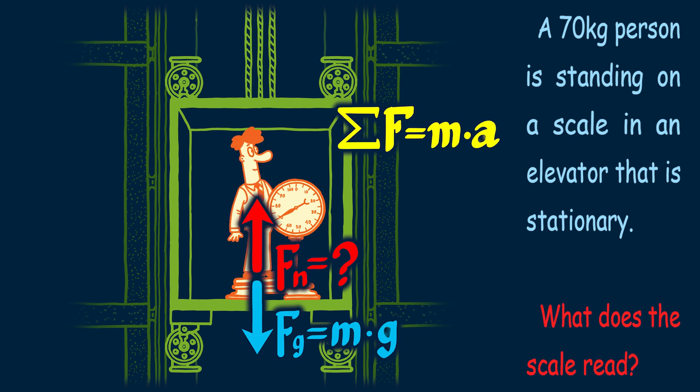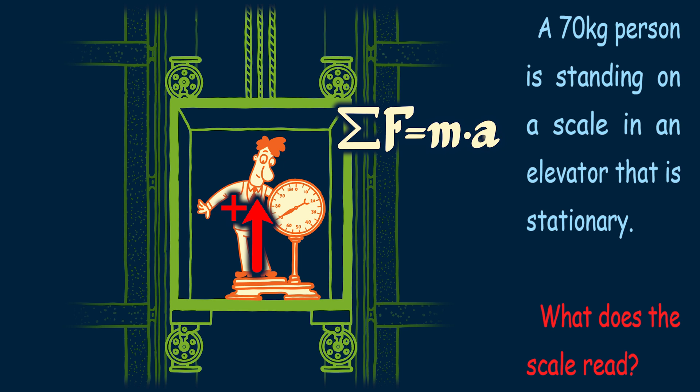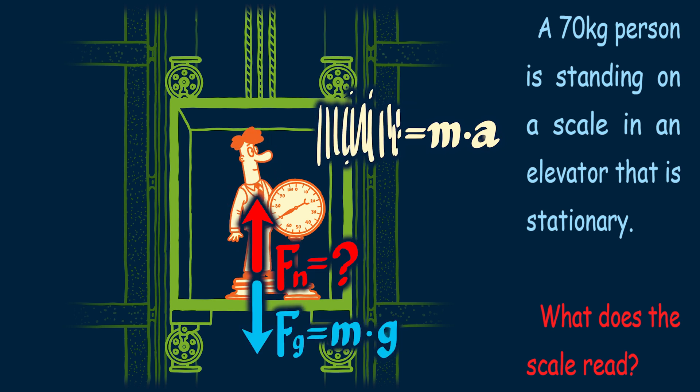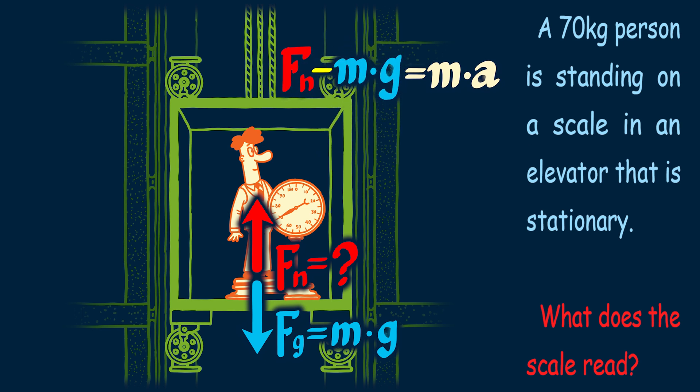Now we use Newton's second law, f equals ma, to add up all the forces and set them equal to the mass times acceleration. In this case, we're going to call anything pointing up as positive and anything pointing down as negative. So when adding up all our forces, this gives us the normal force, fn, minus the force of gravity, mg, which is all equal to the mass times acceleration.